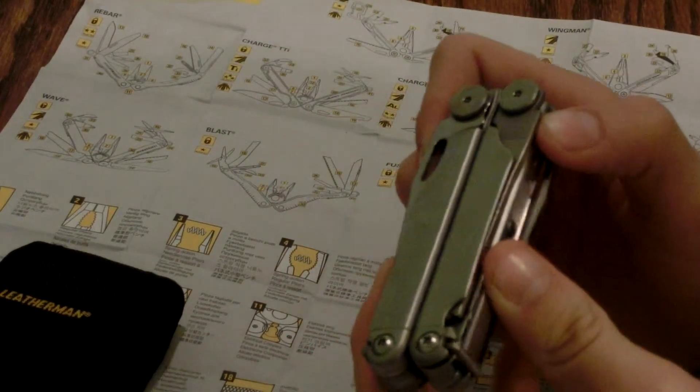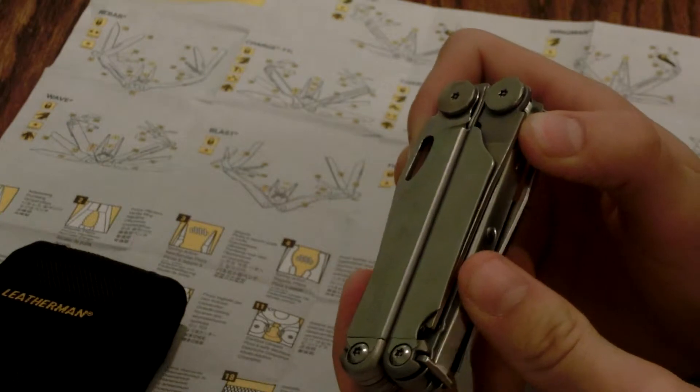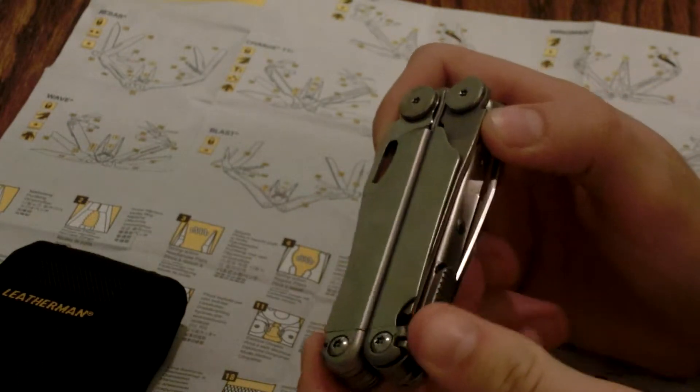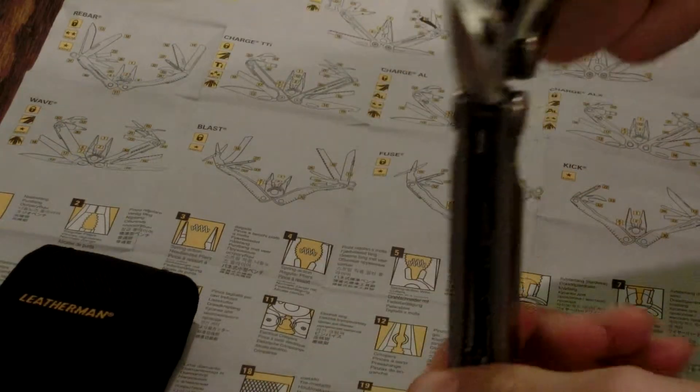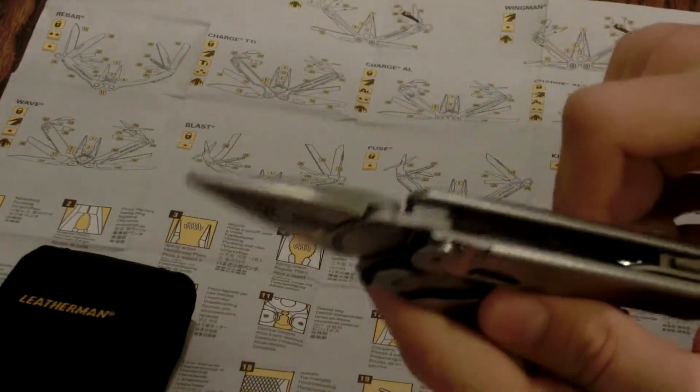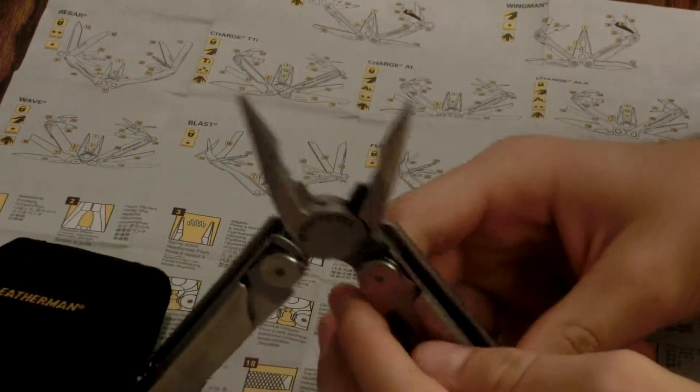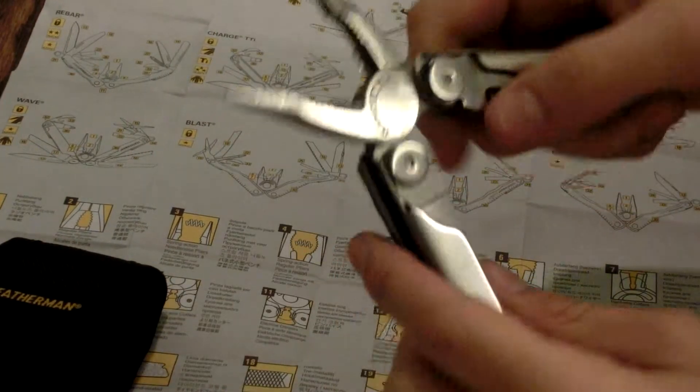So if you break it within the 25 years, call Leatherman, send it to them, they'll send you a new one. The wave multi-tool comes with needle nose pliers with built-in cap crimper, 2.9 inch 420 high carbon clip point knife, 2.9 inch 420 high carbon sheep's foot serrated knife.